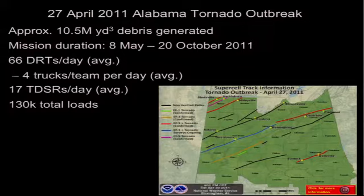The event of interest is a series of tornado storms, one tornado storm that passed through much of the state of Alabama in 2011. It was not massive, but it was pretty big and pretty fast and definitely nasty. 10.5 million cubic yards of debris, this mission went on for a few months. There were about 66 debris removal teams deployed in the field on average on a given day with about four trucks per team, 17 TDSR sites, and about 130,000 total loads delivered. This is not a huge event, but definitely not a small one.